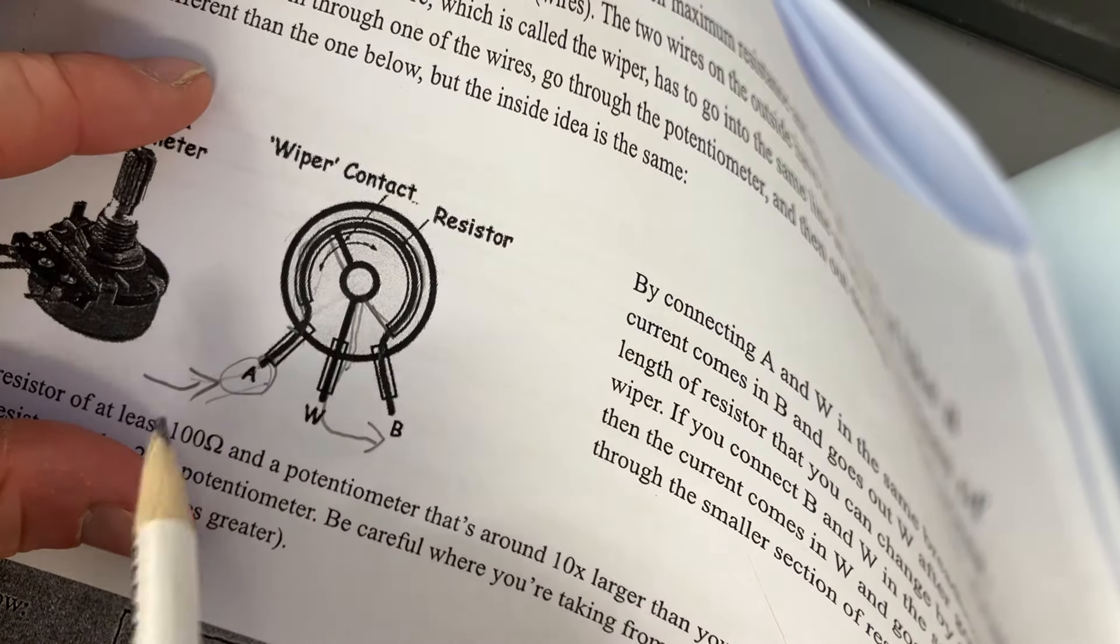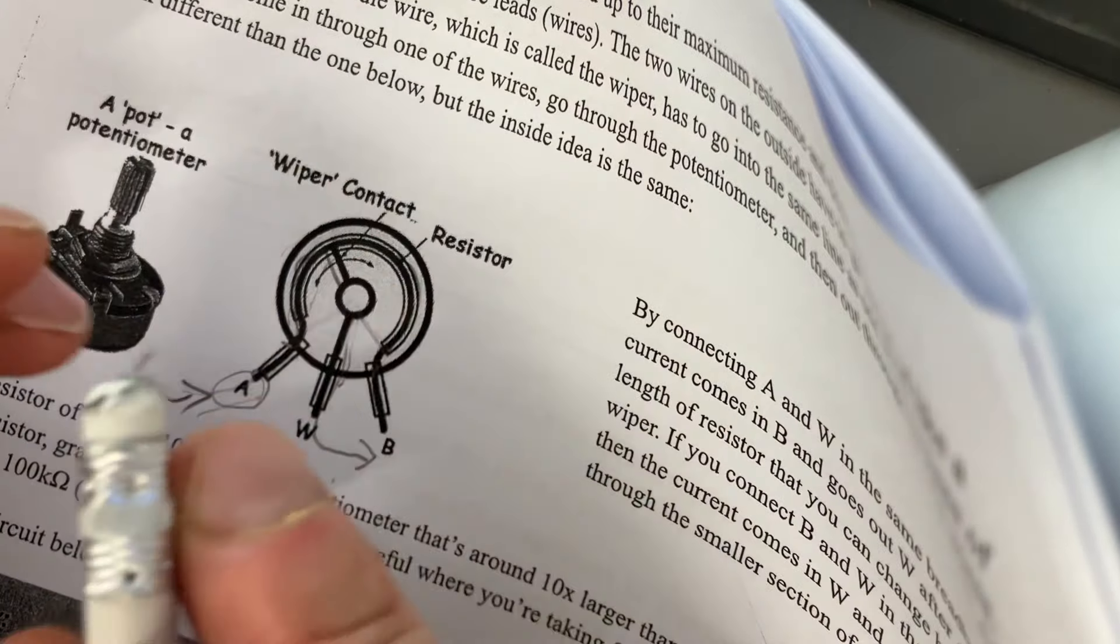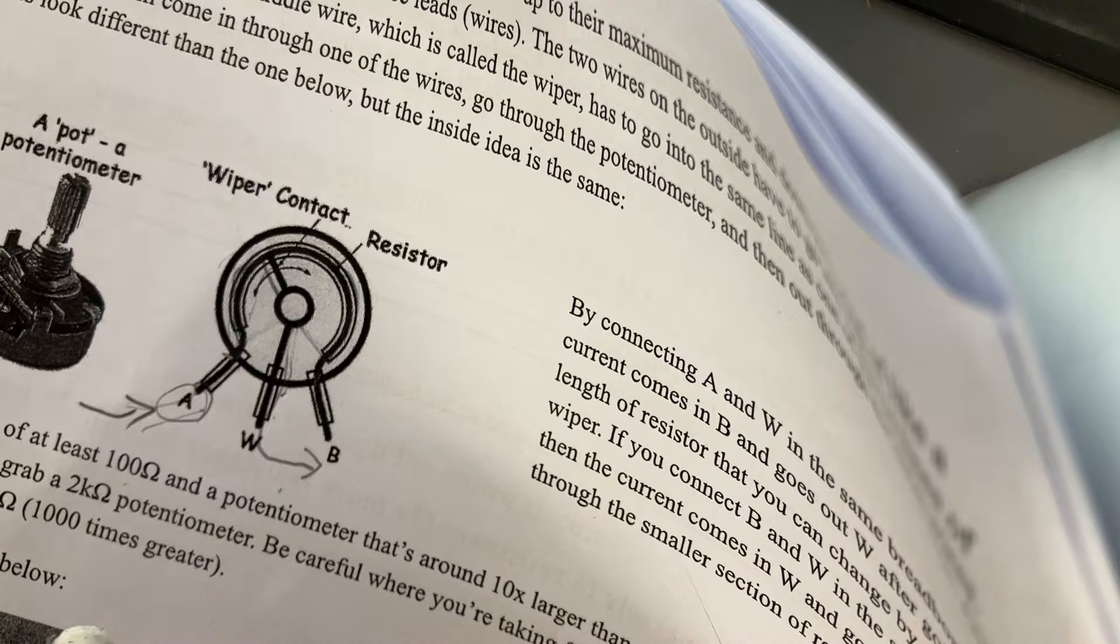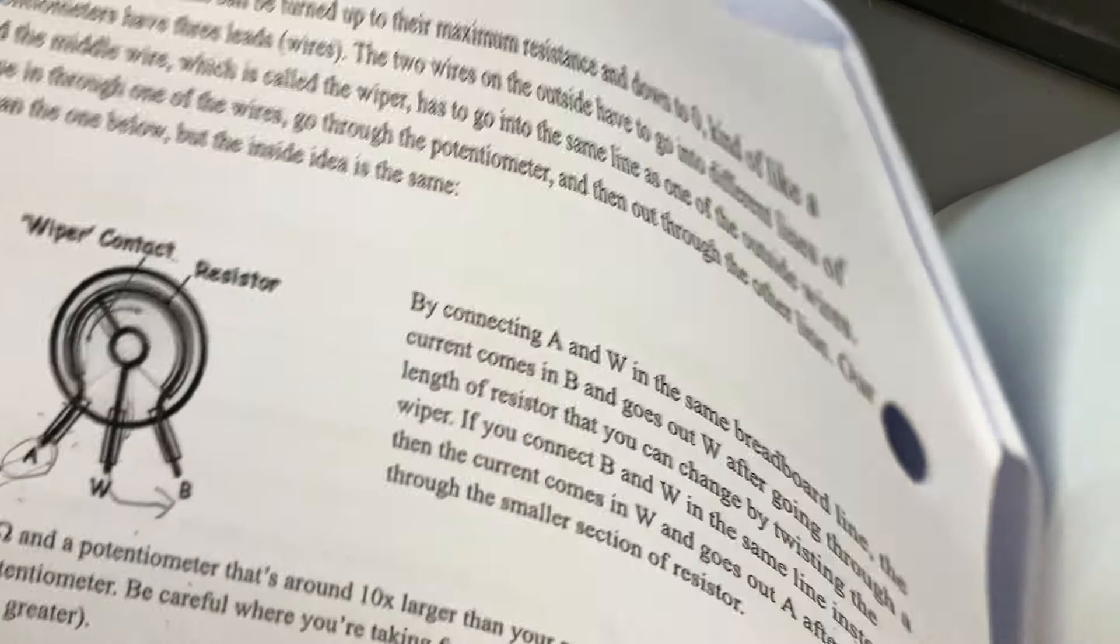Basically, this is like a dimmer switch on a light bulb where you can twist it, or a volume knob on a radio where you can twist it, and it adjusts the volume up or down or adjusts the brightness up or down by increasing or decreasing the resistance.